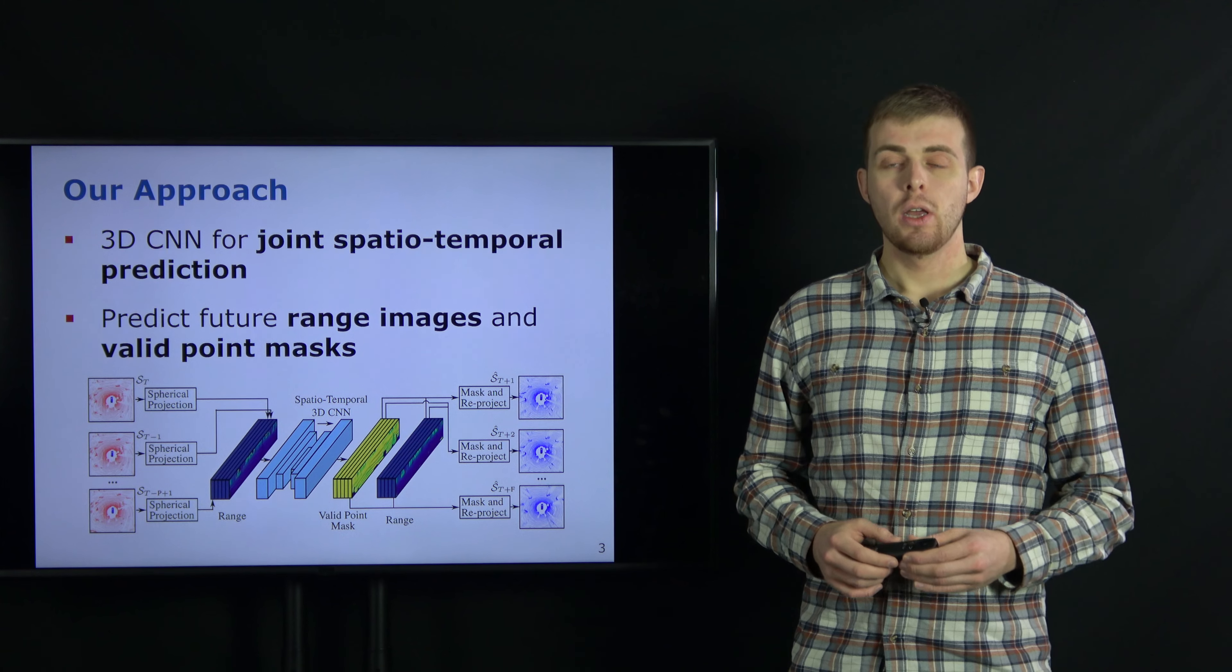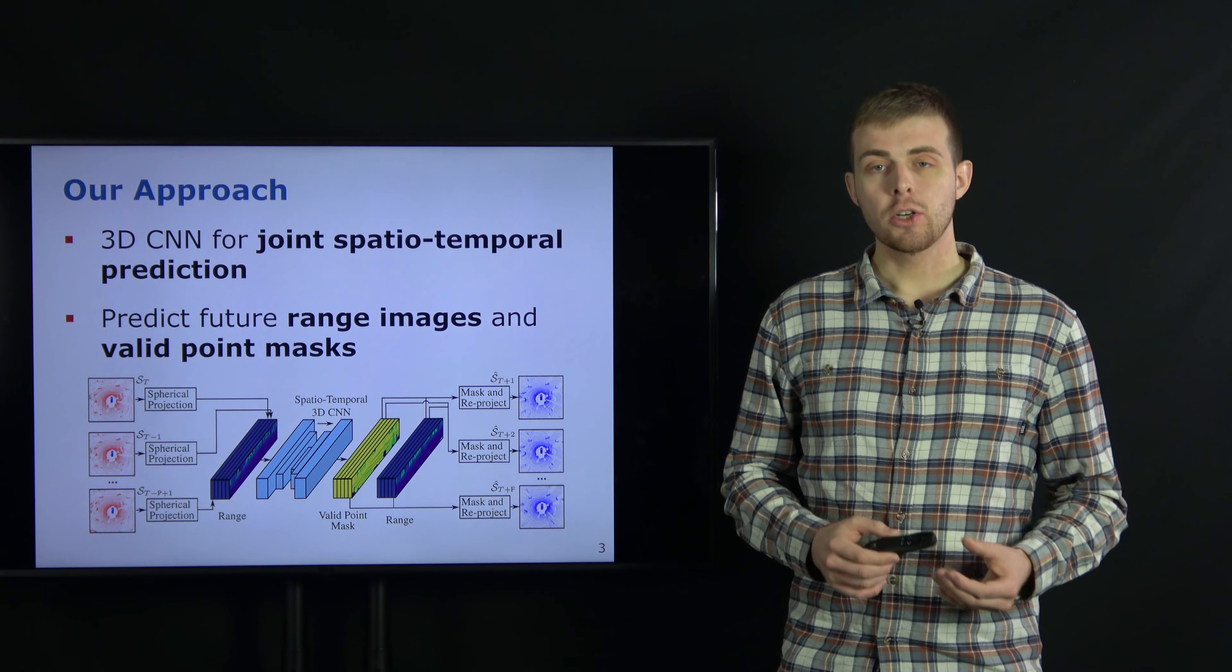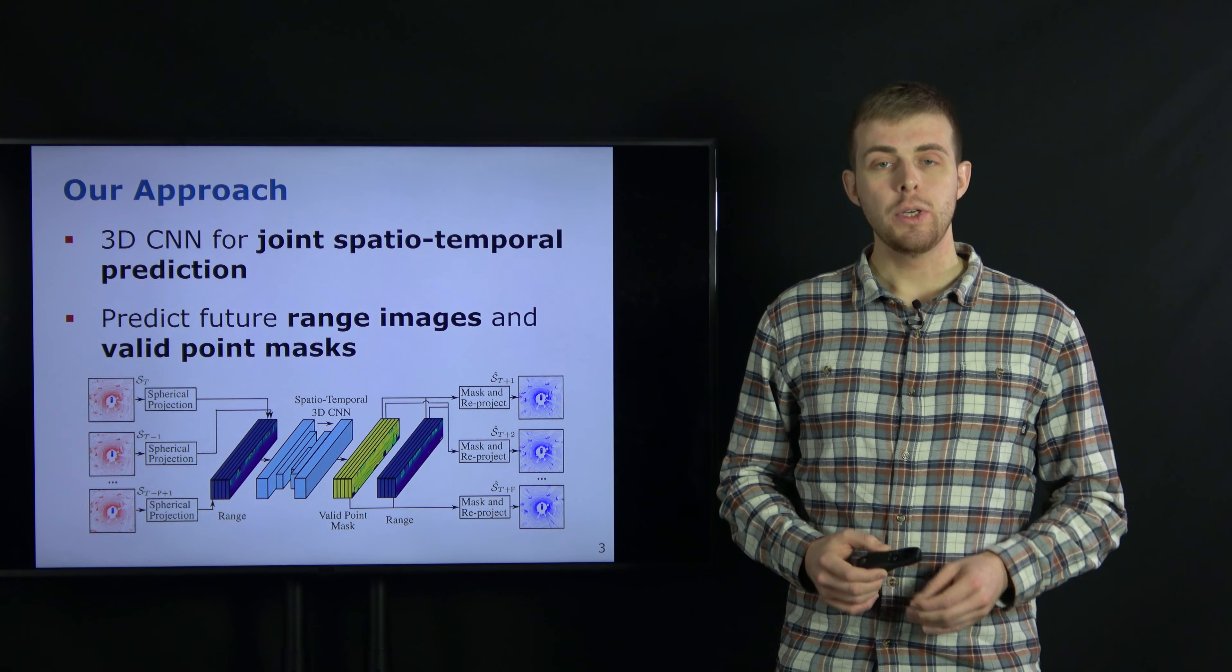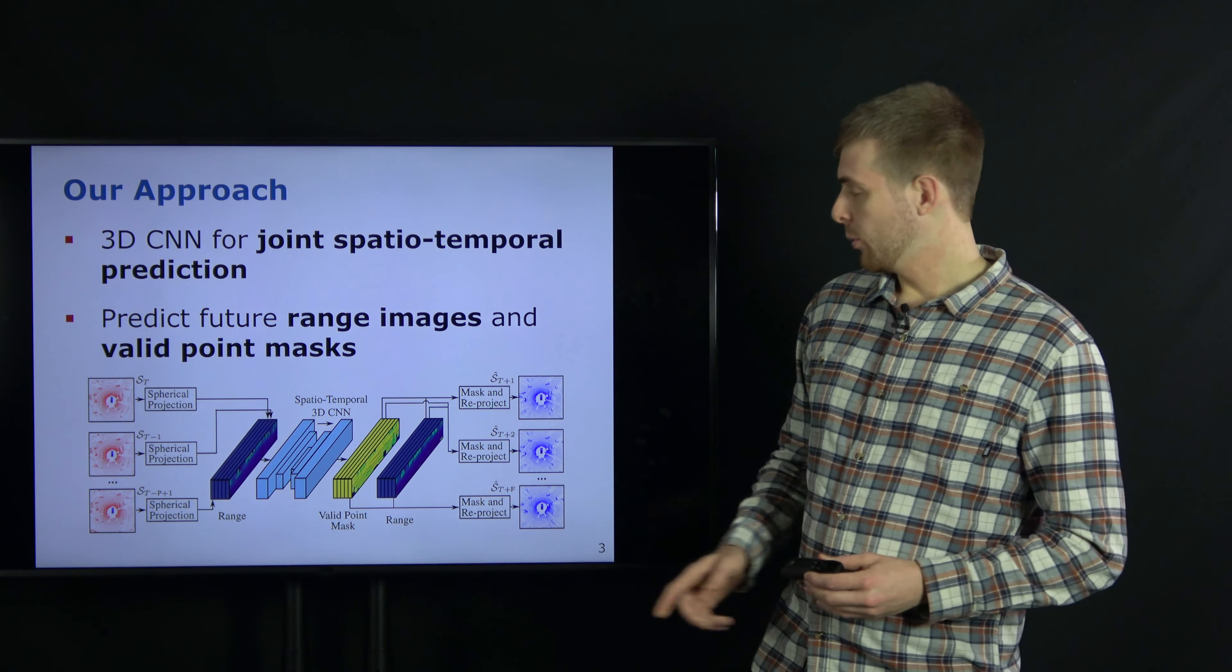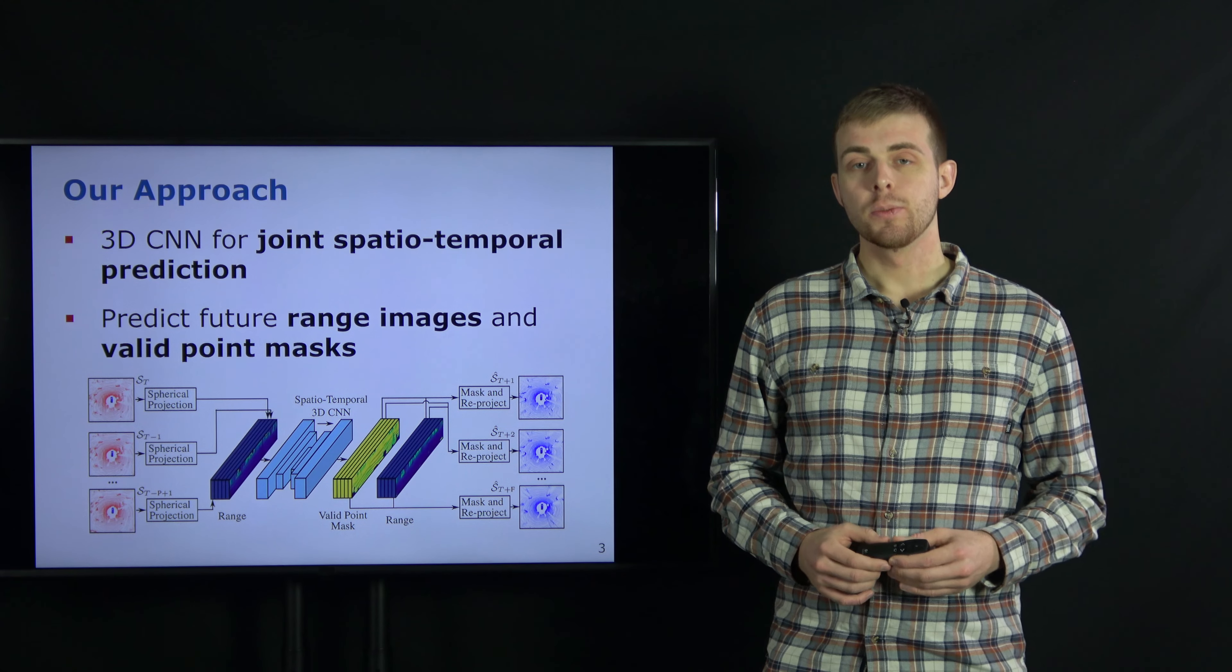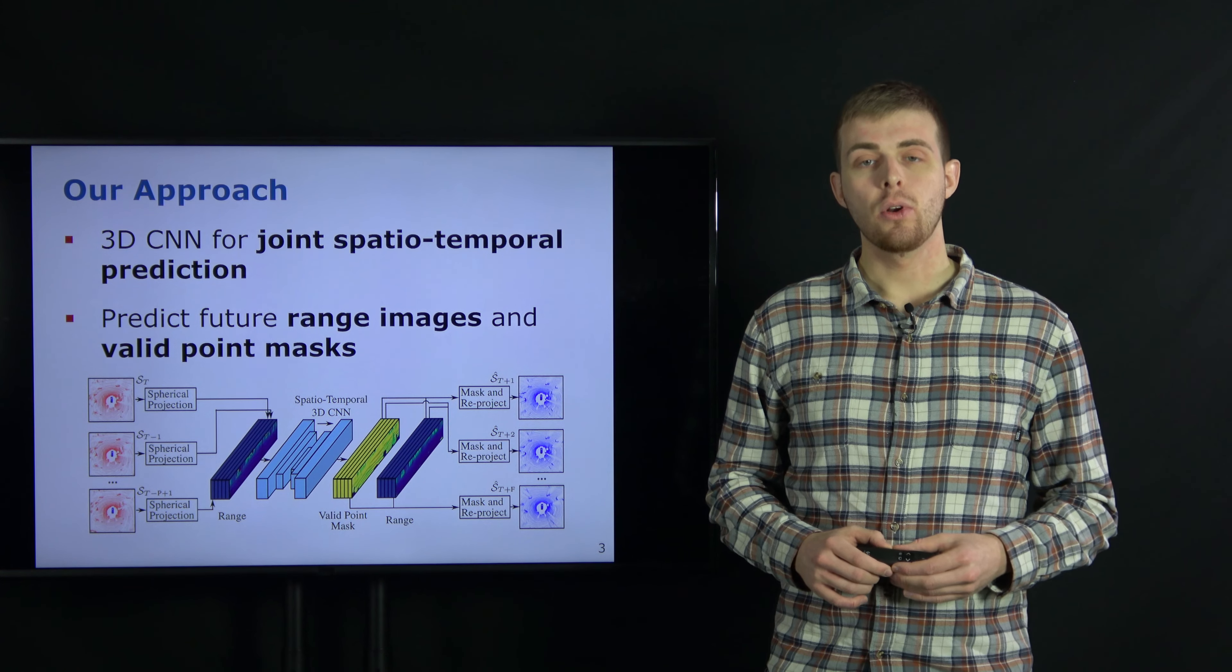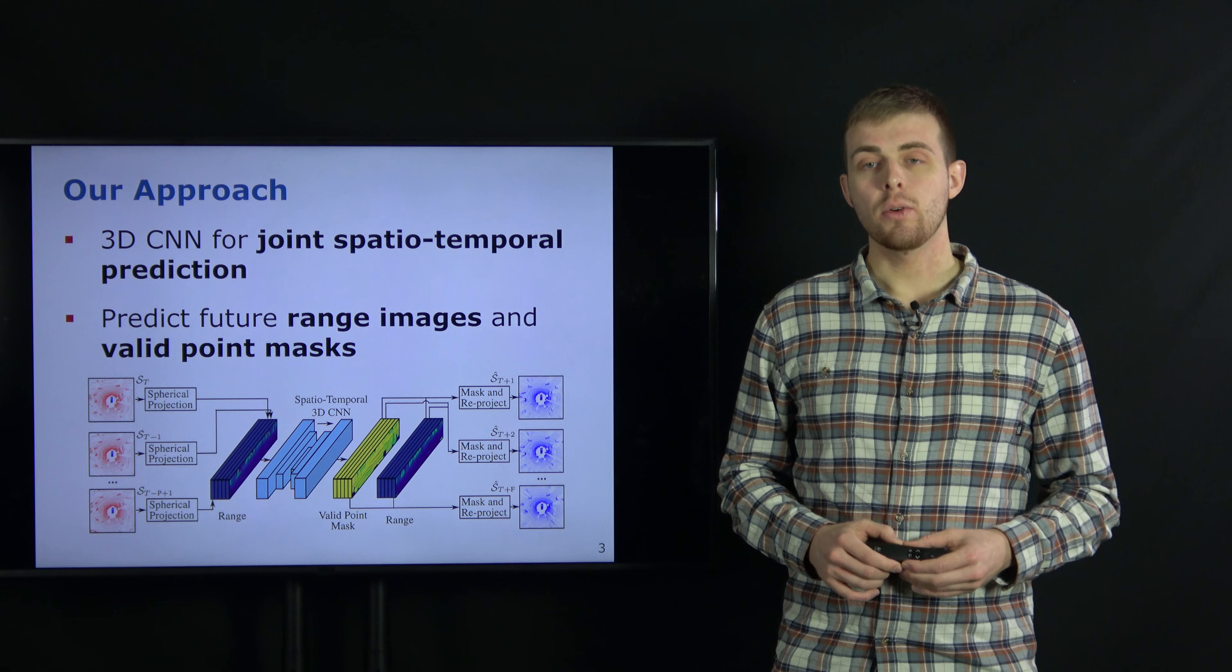From the past sequence of point clouds, we first generate a range image representation with a spherical projection. Note that in case of rotating LiDAR sensors, this is the native representation of the data. Next, we stack the 2D range images along a third temporal dimension. We jointly extract spatial and temporal features from this 3D volume by applying 3D convolutions in our developed architecture.